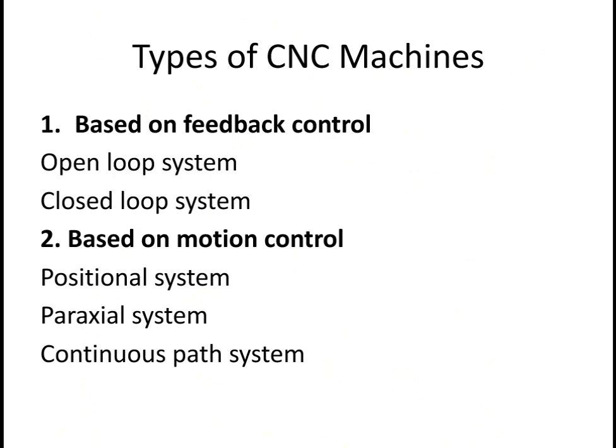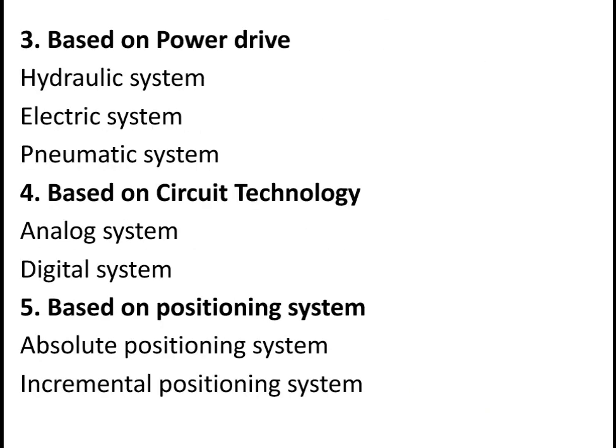Types of CNC machines: Based on feedback control — open loop system and closed loop system. Based on motion control — positional system, paraxial system, and continuous path system. Based on power drive — hydraulic system, electric system, and pneumatic system. Based on circuit technology — analog system and digital system.